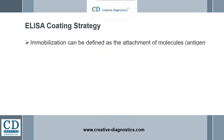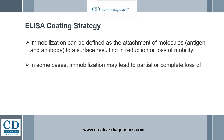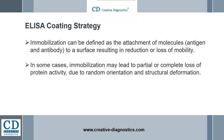Immobilization can be defined as the attachment of molecules — antigen and antibody — to a surface, resulting in reduction or loss of mobility. The way in which proteins are immobilized will determine the properties of the ELISA. In some cases, immobilization may lead to partial or complete loss of protein activity due to random orientation and structural deformation.